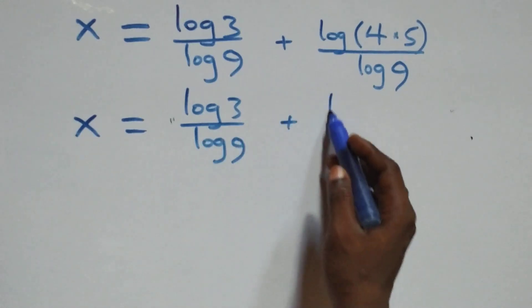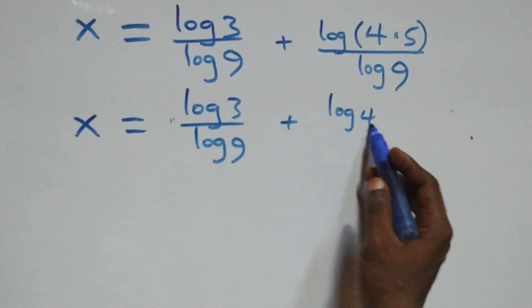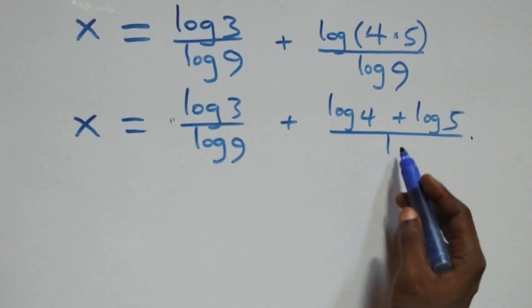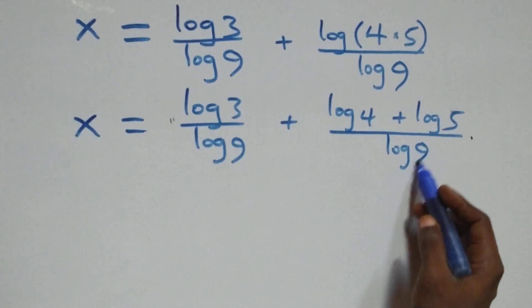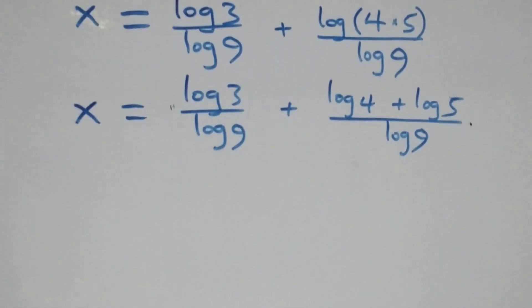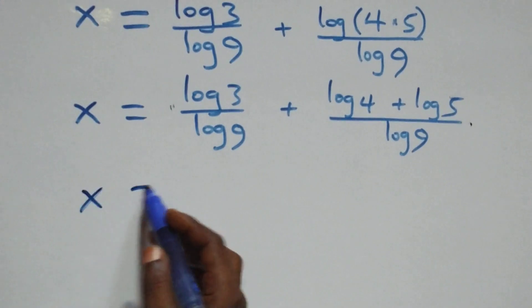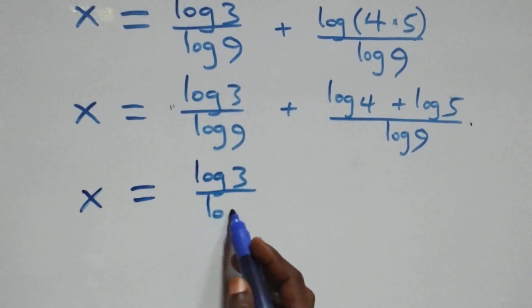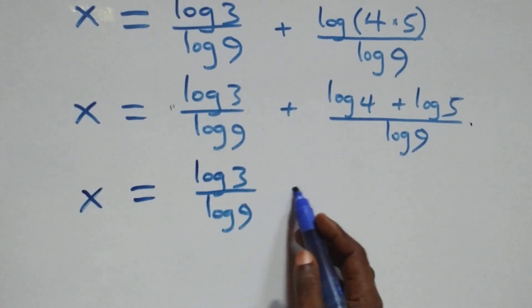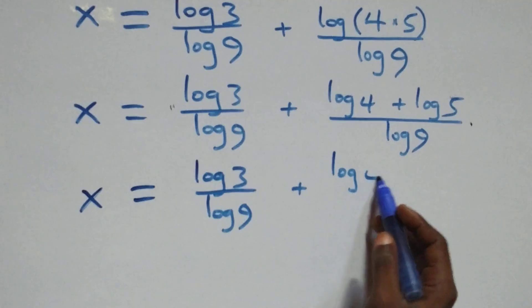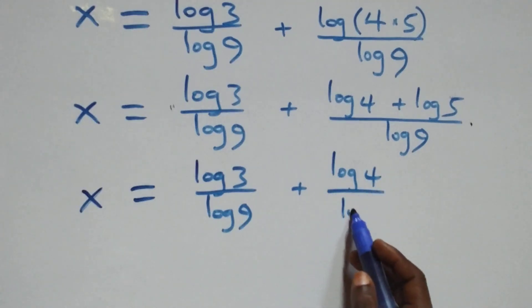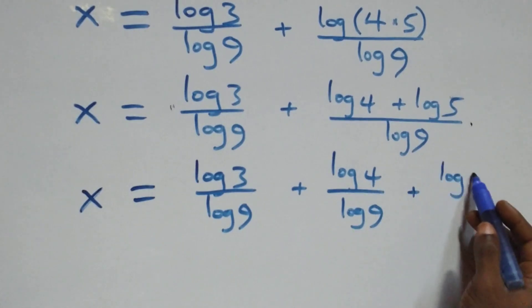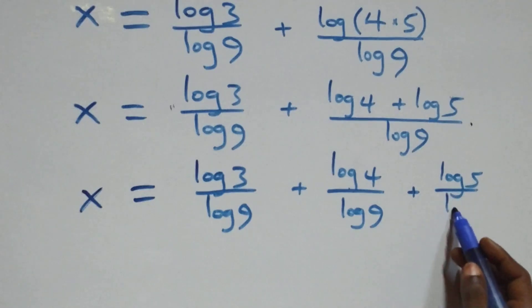Applying the product rule again to log(4 times 5), we separate into two fractions and get x equals log 3 over log 9, plus log 4 over log 9, plus log 5 over log 9.